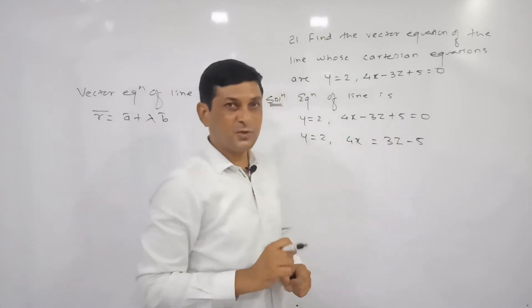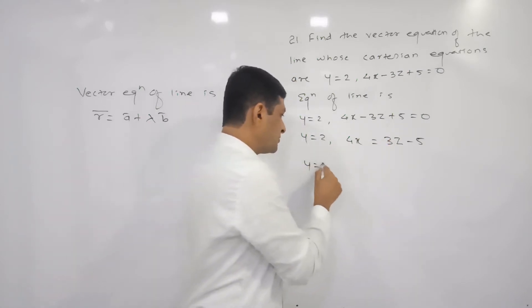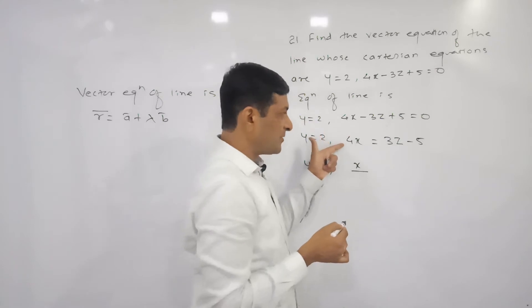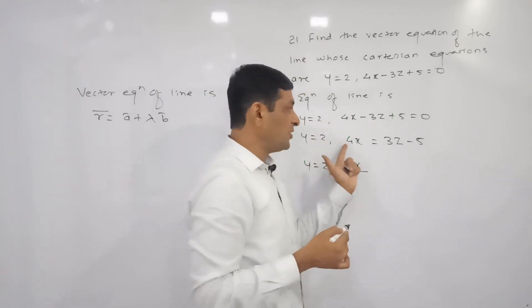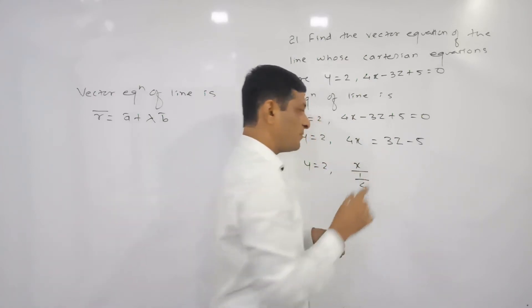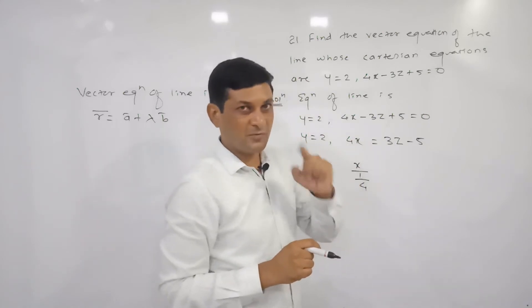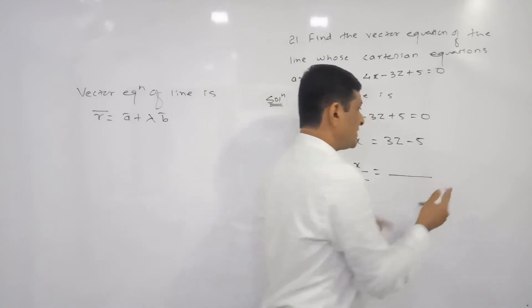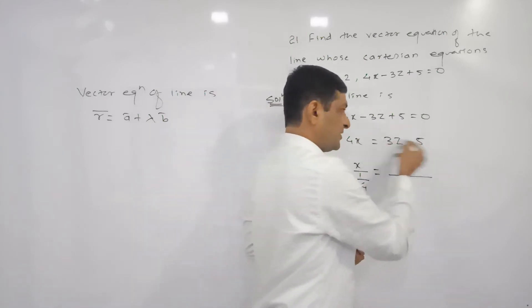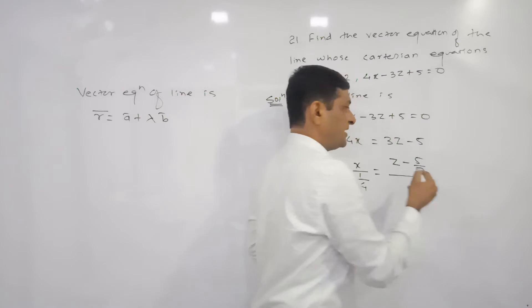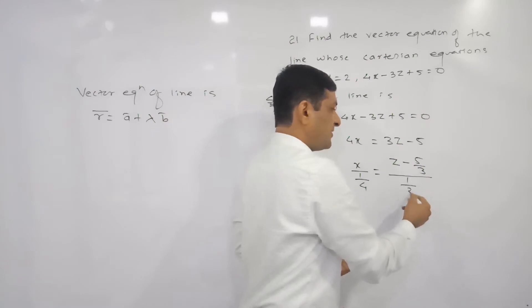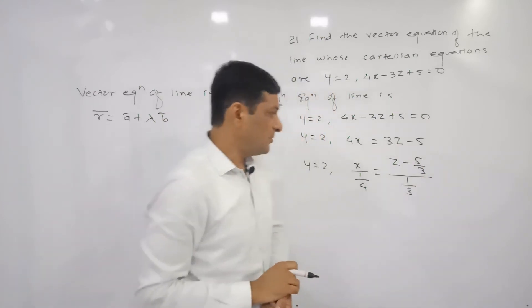To convert to standard form, the coefficients of x and z should equal 1. Keeping y = 2 as is, we divide numerator and denominator of the x-term by 4, so the coefficient of x becomes 1. For z, the coefficient is 3, so we divide numerator and denominator by 3, giving z and minus 5/3.